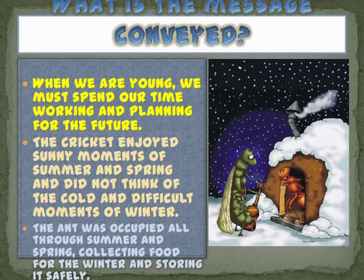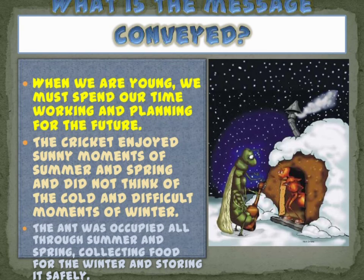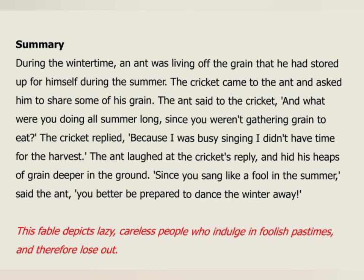The lesson learnt is: when we are young, we must spend our time working and planning for the future. The cricket enjoyed the sunny moments of summer and spring and did not think of the cold and difficult winter. Summer and spring represent our young working age — we must work and save. Old age, like winter, requires preparation. The ant worked hard all through summer and spring, collecting and storing food safely. That is why the ant lives happily in winter while the cricket suffers.